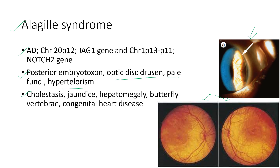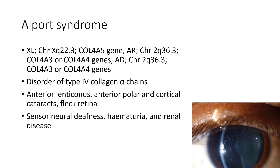Alagille syndrome also features butterfly vertebrae and congenital heart disease. Next is Alport syndrome. It is a disorder of type 4 collagen alpha chains. Ocular features include anterior lenticonus, anterior polar and cortical cataracts, and fleck retina. The systemic features include sensorineural deafness, hematuria, and renal disease.